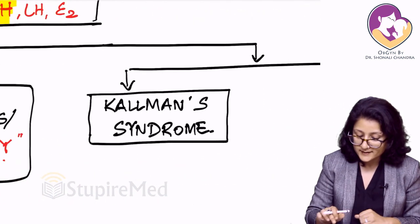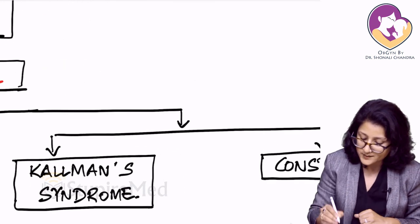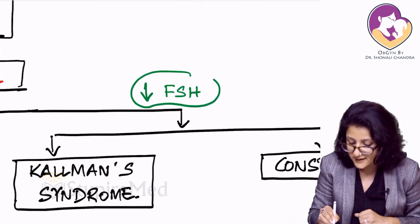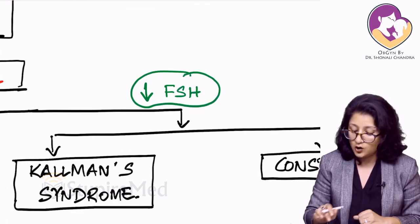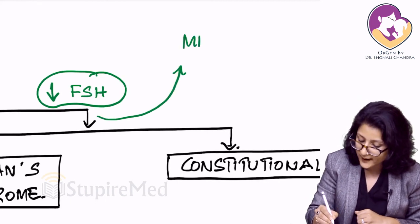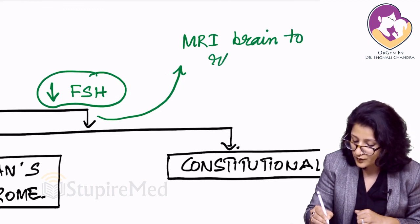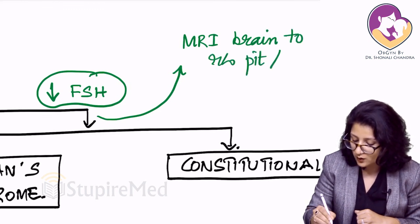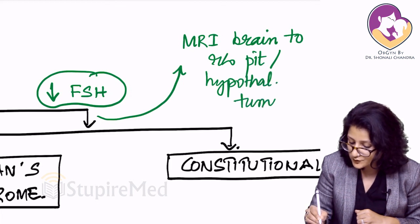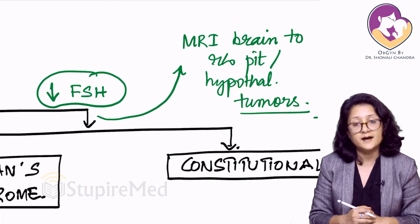What happens if the FSH is decreased? If there is decreased FSH, that means there is a pituitary or hypothalamic cause. This is the time to go for an MRI brain to rule out pituitary or hypothalamic tumors.